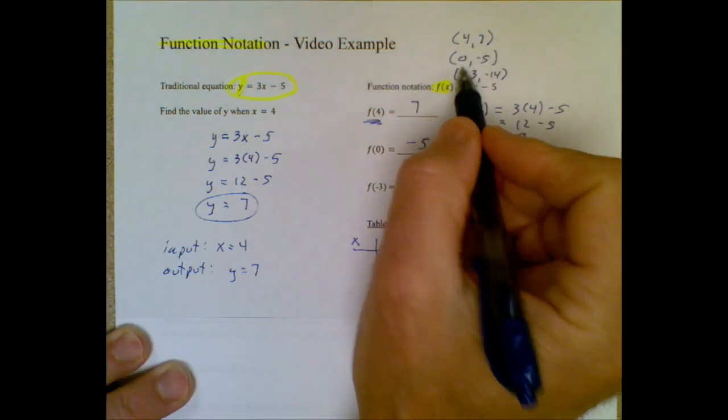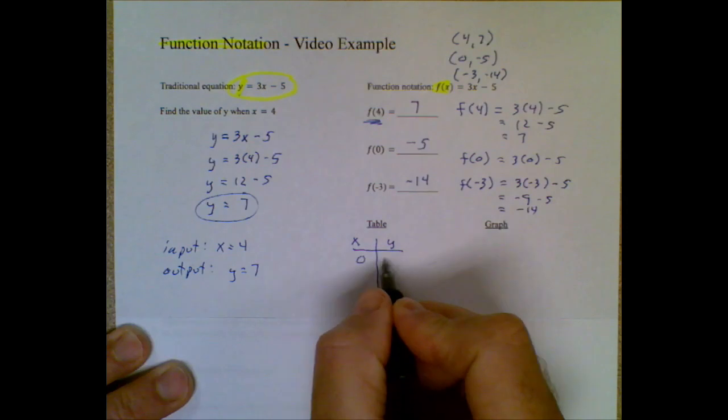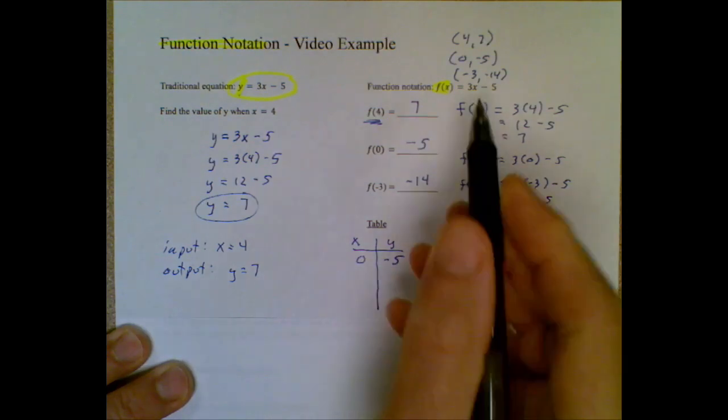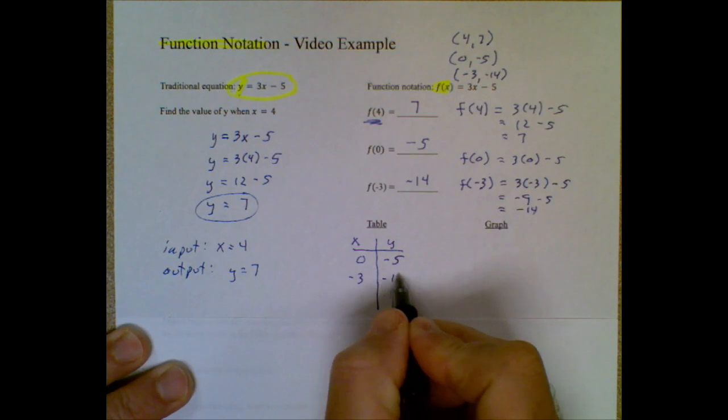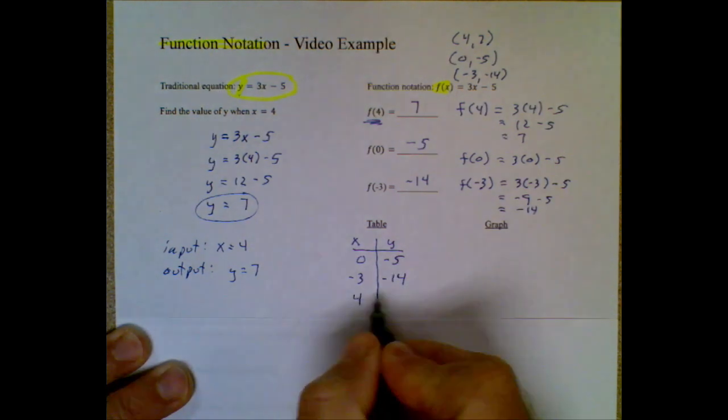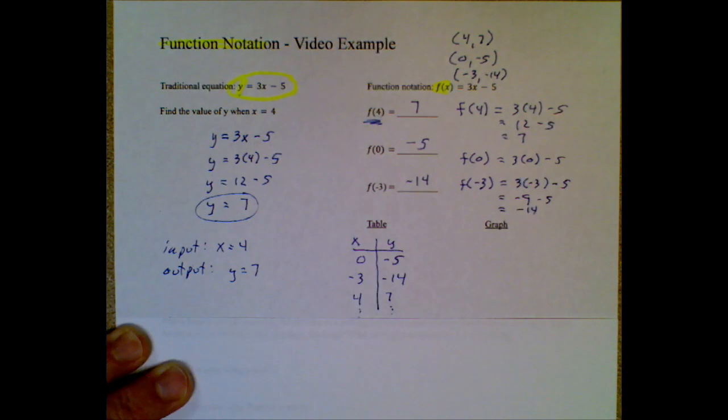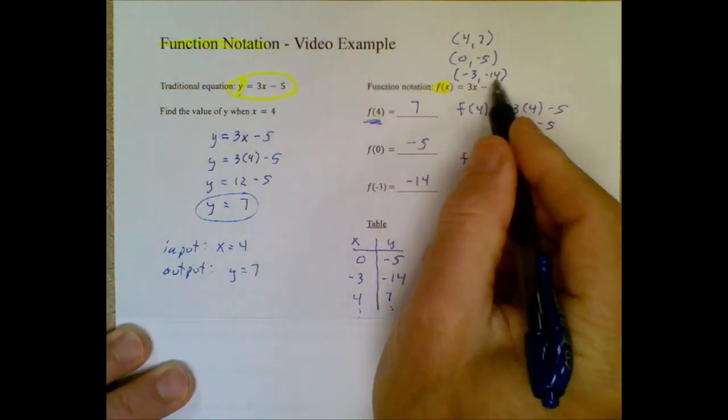For example, I've already started to make a table. It says when I plugged in a 0, I got out a negative 5. If I plugged in a negative 3, I got out a negative 14. When I plugged in a 4, I got out a 7. You could keep going. Let's take a look at how we would graph this function.